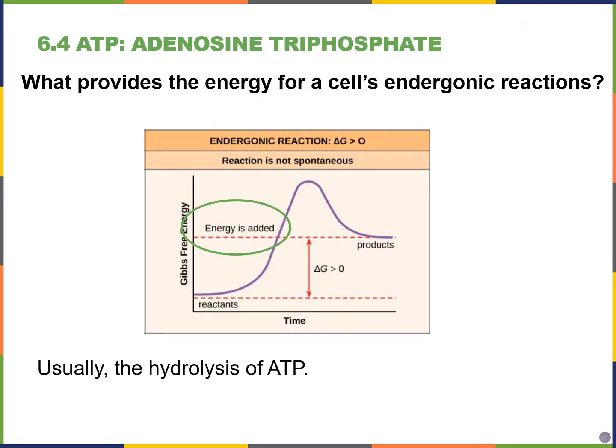What provides energy to power endergonic reactions inside a cell? ATP is the form of energy most commonly used inside cells. ATP stands for adenosine triphosphate, and we're going to look at it more closely in the next slide.